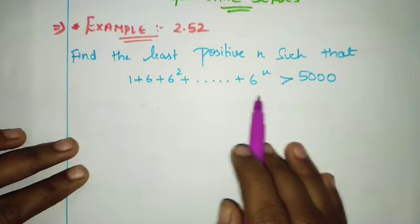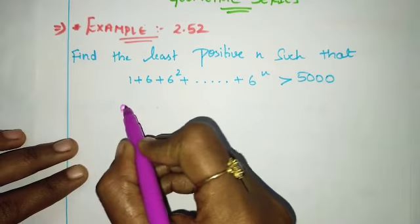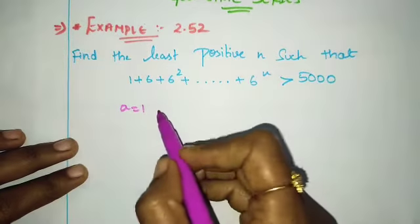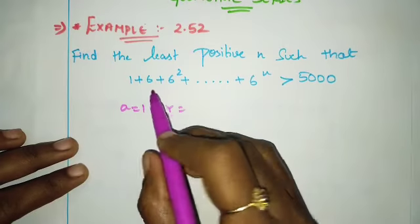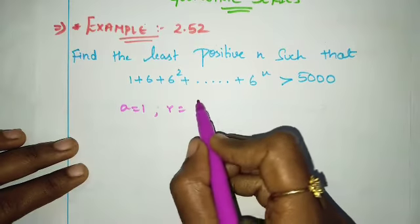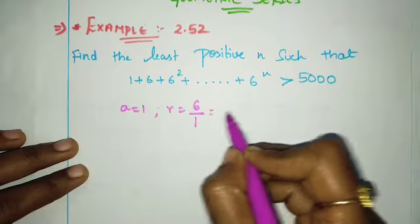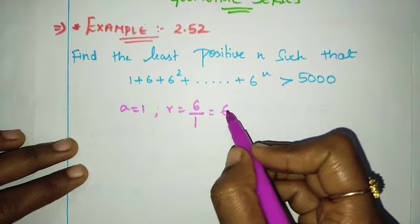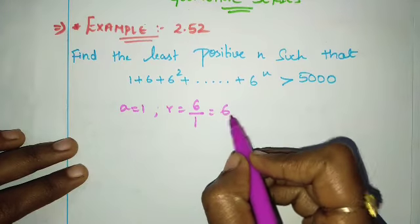Looking at this series, the a value is 1. The r value is t2 divided by t1, that is 6 divided by 1, so r equals 6. The r value is 6.